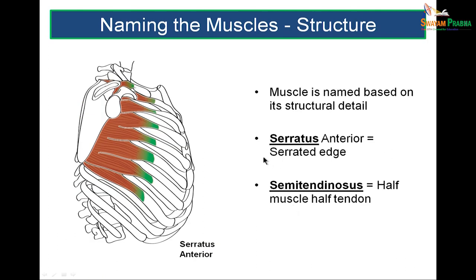Naming muscles based on their structure: the serratus anterior has digitations like a saw-toothed, serrated appearance — hence it is called serratus anterior, meaning serrated edge. Similarly, the semitendinosus in the posterior thigh is half muscle and half tendon — hence the name.